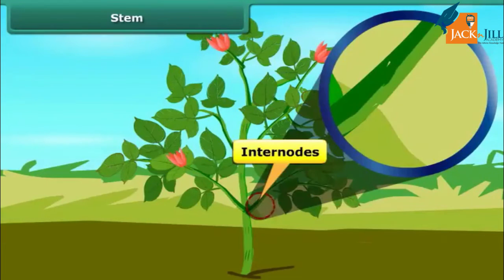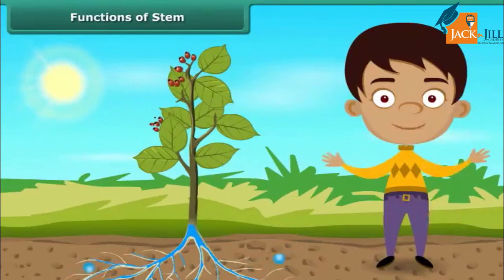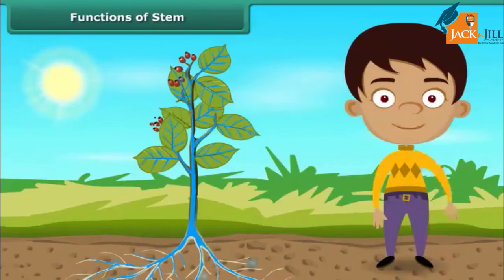Internodes are the stretches between two nodes. As you learned, roots absorb water and minerals from the soil — but how does this water and minerals reach the rest of the plant body? Yes, through the stem. The stem conducts them to the leaves and other parts of the plant. It also supports the plant, enabling it to stand erect.